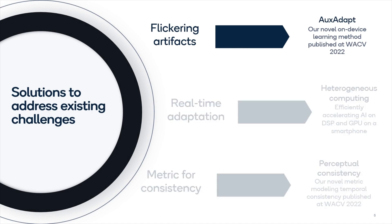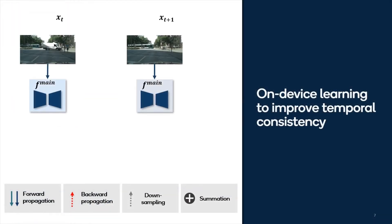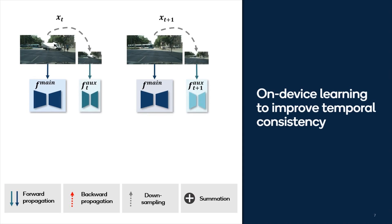The first one is AuxAdapt, our novel on-device learning method. AuxAdapt consists of two networks: first, a base network called mainnet, which performs segmentation for the input video, and second, a tiny auxiliary network called auxnet, which accomplishes efficient on-device learning.